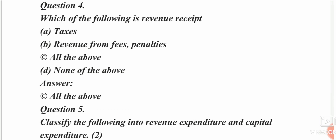Which of the following is a revenue receipt? Options: taxes, revenue from fees and penalties, all of the above, or none of the above. Revenue receipts include taxes as well as revenue from fees and penalties. The answer is C — all of the above.